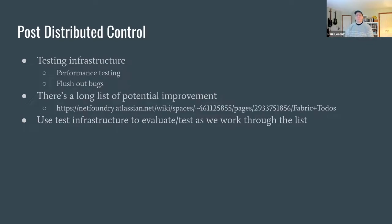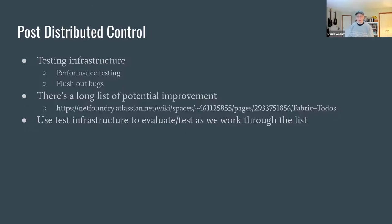After HA and distributed control, the next big focus is going to be on testing infrastructure — infrastructure for doing performance testing and flushing out bugs. We'll be doing some of that in conjunction with HA work since we'll need it for HA as well. There's also a long list of potential improvements to the fabric: changes to the way we do routing, pushing routing out to the edge, and more. We need to make sure those things are actual improvements, so we need a way to test them and make sure they're better and bug-free once we release them. Getting the infrastructure in place is going to be key.